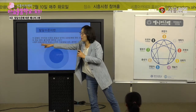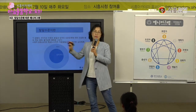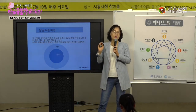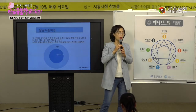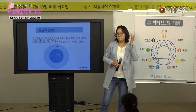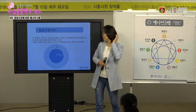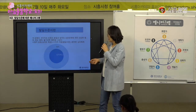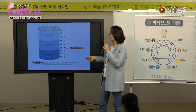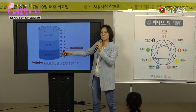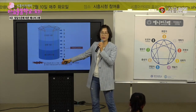이것을 수평적 분류라고 얘기를 해요. 애니어그램의 수평적 분류는 9가지 유형으로 사람을 나누는 거예요. 오늘 본격적으로 말씀드릴 발달 수준은 지금 보시는 것처럼 수직적 분류예요.